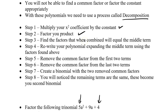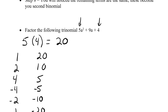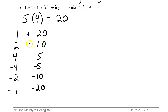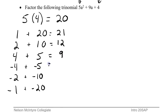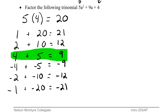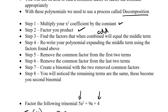Step three: find the factors that when combined — meaning added — will equal the middle term. We're looking for a pair that adds to positive 9. Adding the pairs: 1 and 20 is 21; 2 and 10 is 12; 4 and 5 is 9; negative 4 and negative 5 is negative 9; negative 2 and negative 10 is negative 12; negative 1 and negative 20 is negative 21. So 4 and 5 add to positive 9 — we have our winners. Step three is done.